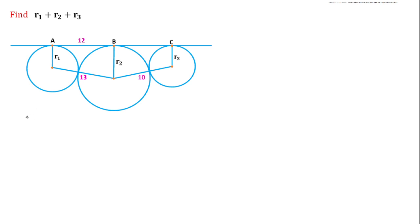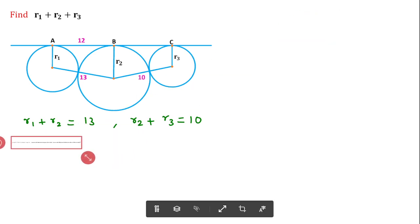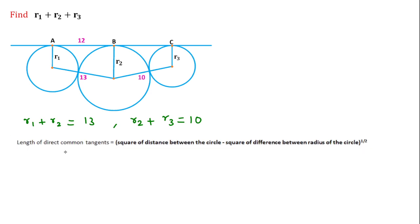According to the question, r1 plus r2 equals 13 and r2 plus r3 equals 10. Now we know the formula: the length of a direct common tangent equals the square root of the distance between the circles squared minus the difference between the radii squared, to the power 1 by 2.